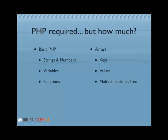PHP arrays are basically a collection of keys and values — like an ID and a name, always in pairs. Keys can be a number or a string, and values can be anything — very similar to a variable. When you assign a value to a key, it's very similar to assigning a value to a variable. Then you have multidimensional arrays, which in Drupal can get quite complex — you might encounter a term called 'tree'.